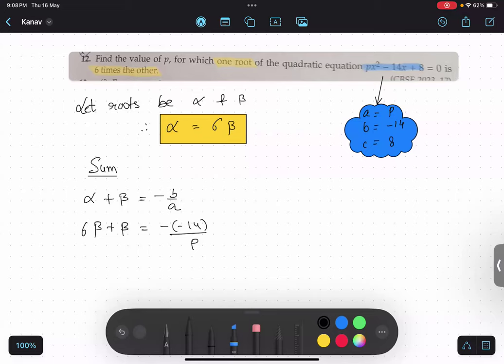So six times beta plus beta. What is the answer for that? Seven beta. Very good. Seven beta equals to 14 upon p. So keep this as it is. I can't solve it further as of now.